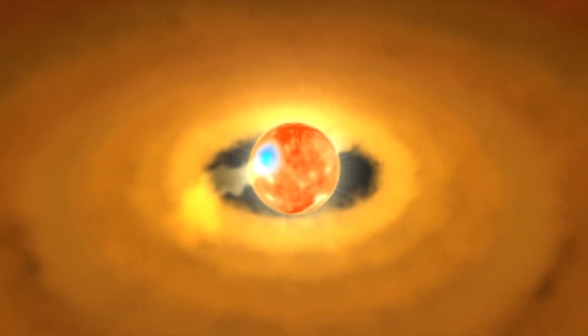A protostar looks like a star, but its core is not yet hot enough for fusion to take place. The brightness we observe comes from the heating of the protostar as it contracts.